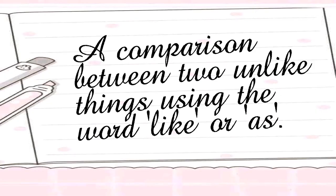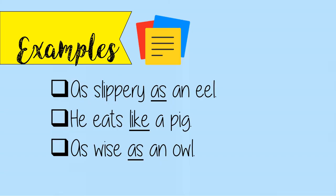Simile is a comparison between two unlike things using the word 'like' or 'as.' Examples: as slippery as an eel. He eats like a pig. As wise as an owl.